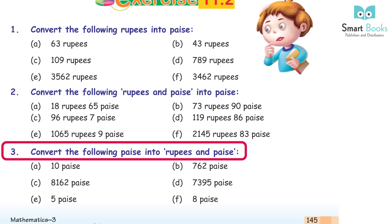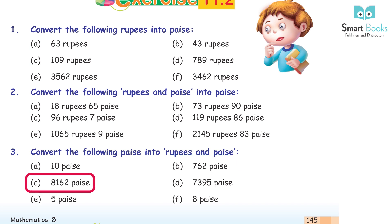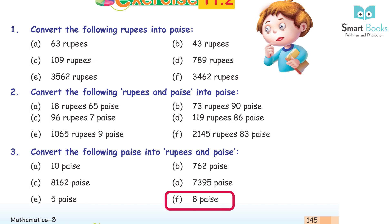Question 3: convert the following paise into rupees and paise. a. 10 paise = Rs. 0.10. b. 762 paise = Rs. 7.62. c. 8162 paise = Rs. 81.62. d. 7395 paise = Rs. 73.95. e. 5 paise = Rs. 0.05. f. 8 paise = Rs. 0.08.